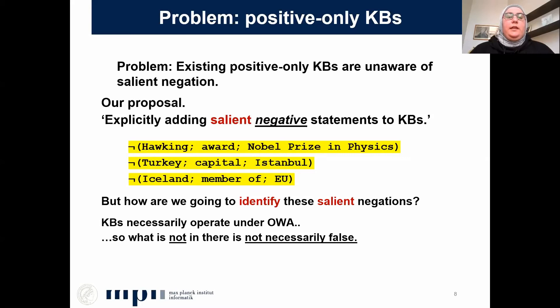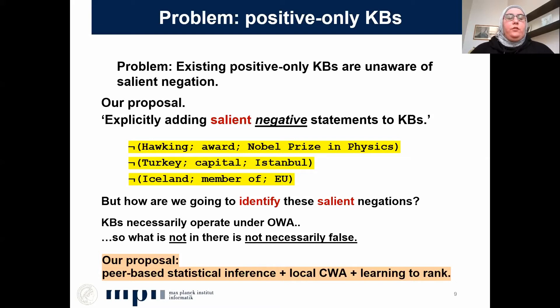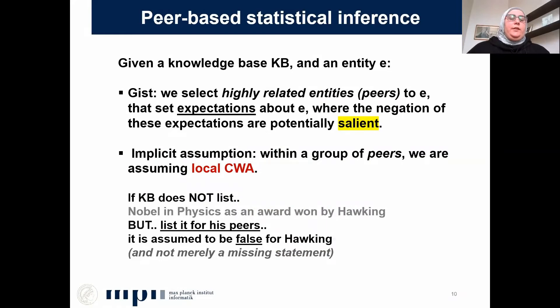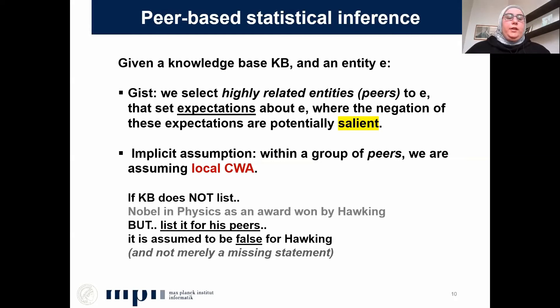In this work, we propose a peer-based statistical inference method with a local closed world assumption, followed by a learning-to-rank model. To summarize the idea: given a knowledge base and an entity, we aim to select highly related entities — we call them peers — and then use these peers to set a number of positive expectations about the entity. The absence of those expectations would be interesting for that entity. We assume that within a group of peers, there is a local closed world assumption.